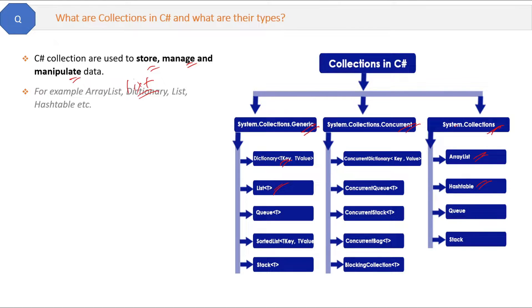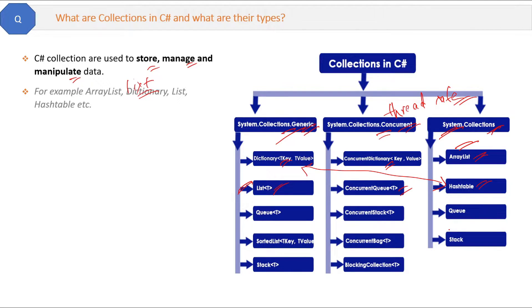The first category is normal collections — these are the basic ones: ArrayList, HashTable, Queue, and Stack. Then we have concurrent collections, which are thread-safe collections in C#, meaning if you are using multi-threading in your application, these collections can be helpful. The third category is generic collections — List is the generic version of ArrayList, and Dictionary is the generic version of HashTable. If you know generics and normal collections, generic collections are very easy.